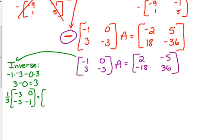When I multiply by 1 third, oh, this time I don't get so many fractions. I get negative 1, 0, negative 1, and negative 1 third. There is one fraction in there. So, that is the inverse of this matrix.